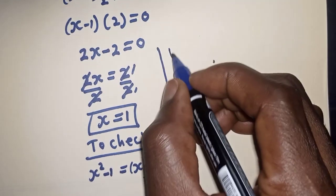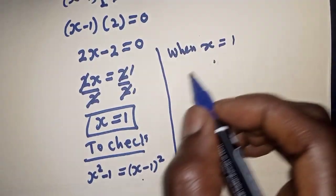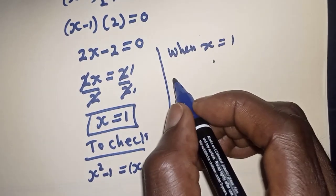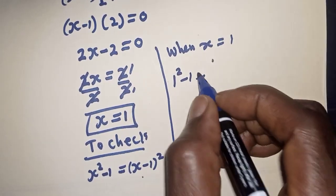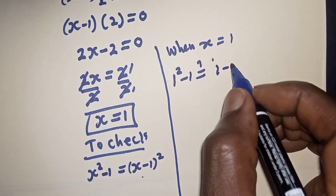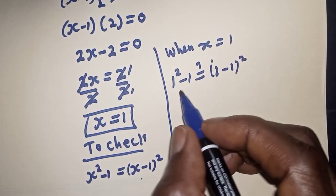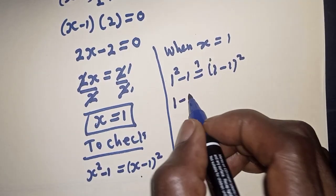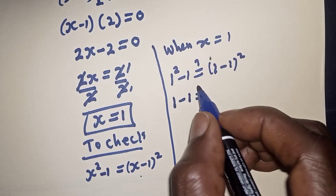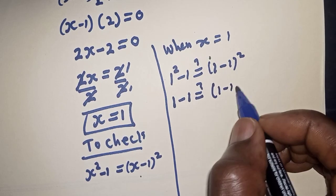s squared minus 1 is equal to s minus 1 squared. Then when s is equal to 1, here we have 1 squared minus 1 must be equal to 1 minus 1 squared. 1 squared minus 1, this is 1 minus 1, must be equal to 1 minus 1.